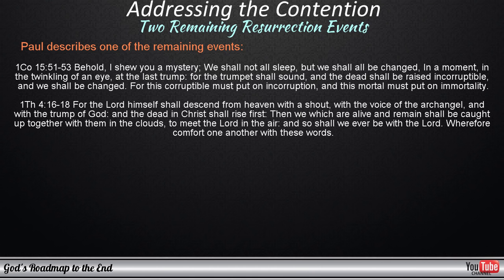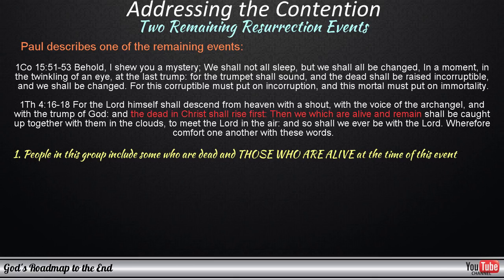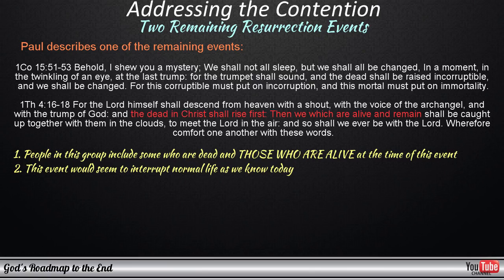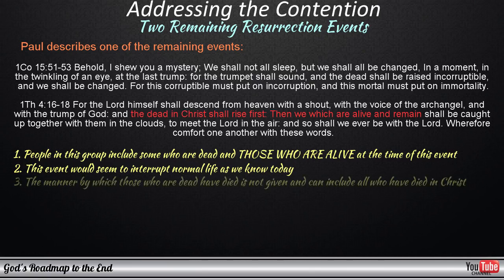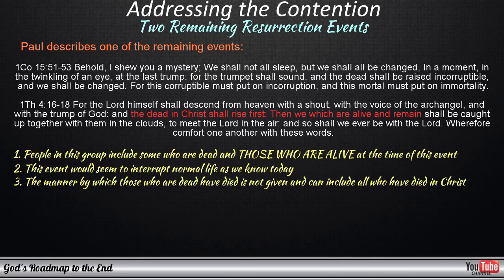Paul describes a resurrection event involving a specific group of people to which the following important attributes apply. People who belong to this group include some who are dead and those who are alive at the time when this event occurs. This event would seem to occur when people are going about their lives as we are doing today. There is nothing unusual mentioned about the condition on earth when this happens. Paul does not list any requirements regarding the manner of death applied to those members of this group who had already died and who will be raised from the dead, pointing us to the fact that this resurrection can include all who have died in Christ since Jesus' resurrection up to this point. This also points to and represents the attributes of the main harvest event.